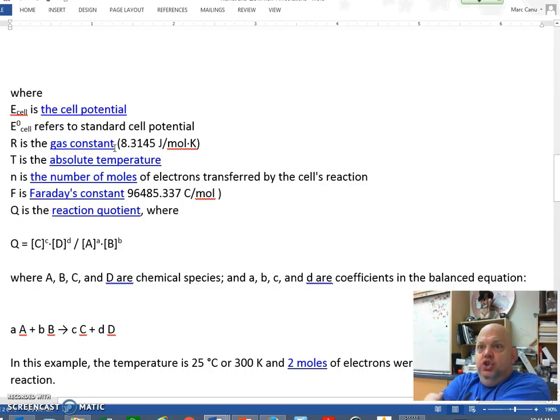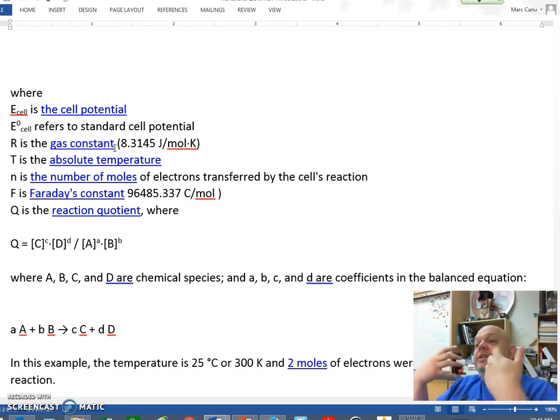Because the Nernst equation is taking into account the standard cell, but you need to subtract some things, the fact that you have a non-concentration, that the concentrations are not the same and they are not one molar. So we got RT divided by NF times the LN of Q. Let's analyze, because that's the Nernst equation. E cell is the cell potential. The E standard potential is the standard potential cell. R is our gas constant, 8.3145 joules per mole times Kelvin. T is our absolute temperature in Kelvin.